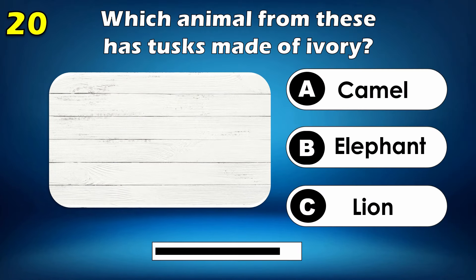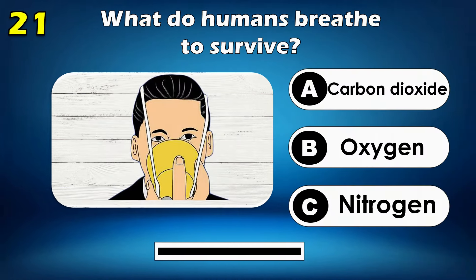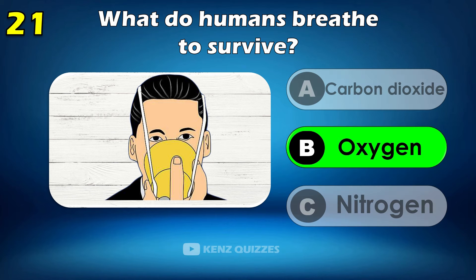Which animal from these has tusks made of ivory? Elephant. What do humans breathe to survive? Oxygen.